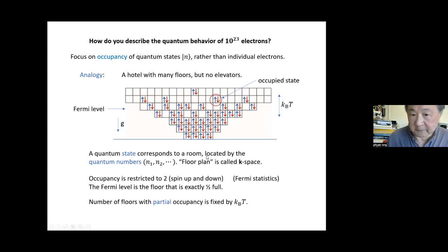The spread of the partially occupied floors is determined by the absolute temperature. At T going to zero, there's only one floor that has partial occupancy. But as you heat up the chunk of metal, the floors that are partially occupied will spread up. Now you need a way to locate the room. You need a way to rapidly identify the occupancy. A room is identified by the quantum state.